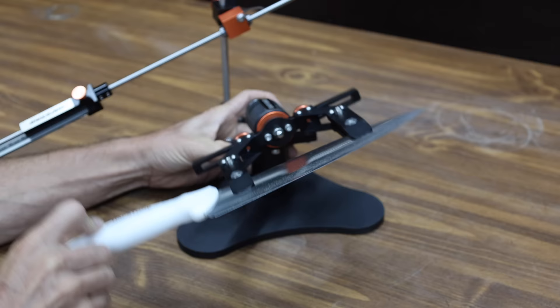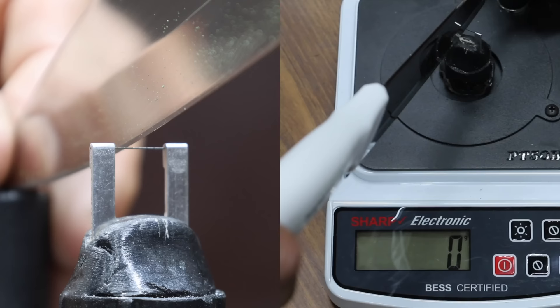Not including setup time, about five minutes to sharpen the knife with the Hapstone. Just like the WorkSharp and Lansky, the Hapstone created a very straight and sharp edge. And the Hapstone performed very closely the same as the WorkSharp at 105.